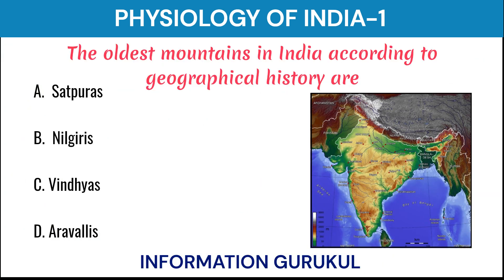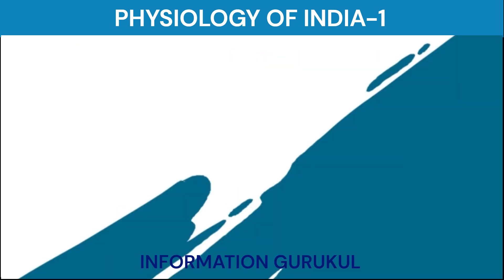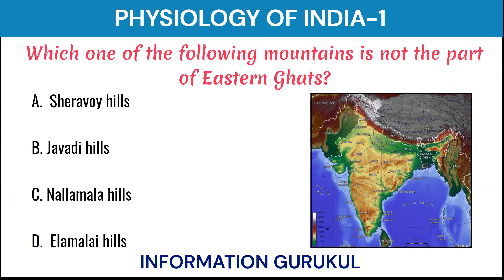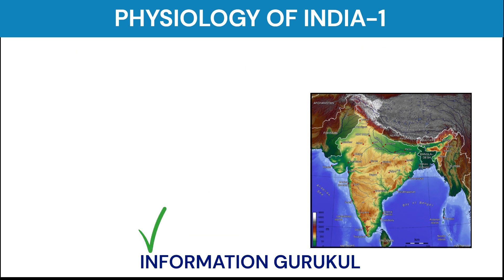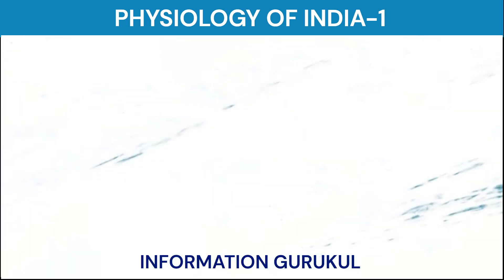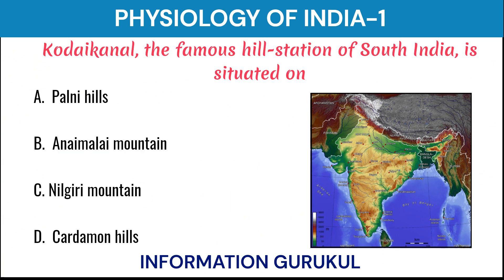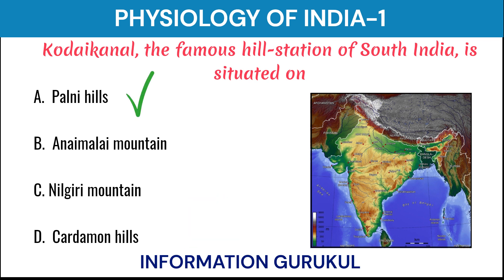The oldest mountains in India according to geographical history are the Aravalis. Which one of the following mountains is not part of the Eastern Ghats? Elamalai Hills. Kodaikanal, the famous hill station of South India, is situated on Palani Hills.